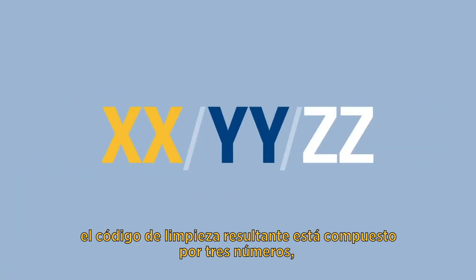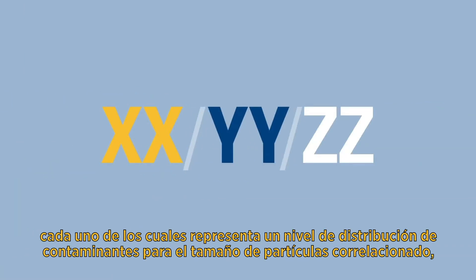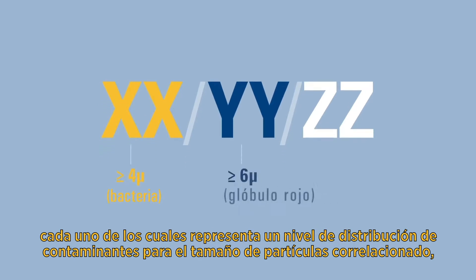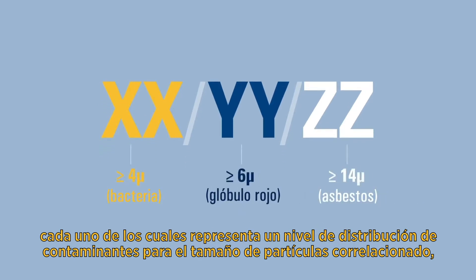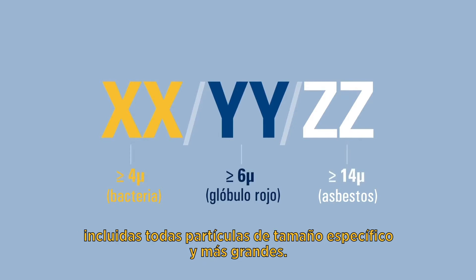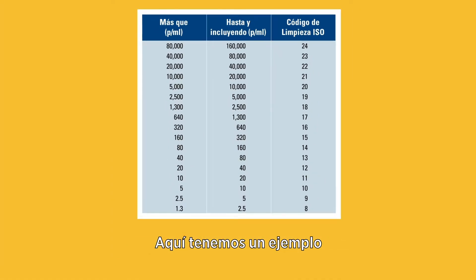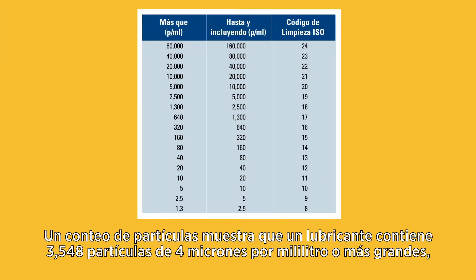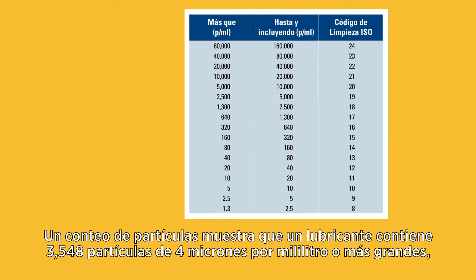The resulting cleanliness code is composed of three numbers, each representing a contaminant distribution level for the correlating particle size, including all particles of the specified size and larger. Here's an example: a particle count shows a lubricant contains 3,548 particles per milliliter that are 4 micron or larger.